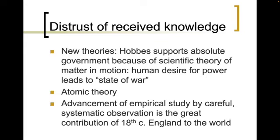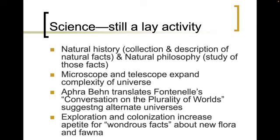For example, we have new scientific theories. Hobbes supports absolute government because of scientific theories of matter in motion — a human desire for power apparently leads to a state of war. We also see the idea of atomic theory happening, and the advancement of empirical studies by careful systematic observations is likely the greatest contribution of 18th century England to the world, where we're now going to use that sense of hypothesis and theories and systematic observations in order to test. However, science is still pretty much a lay activity. We're looking more at natural history — the collection and description of natural facts — and natural philosophy, the study of those facts.